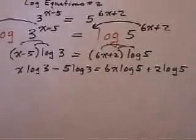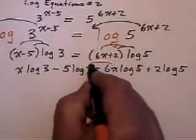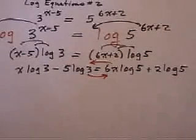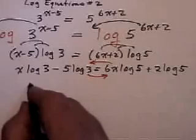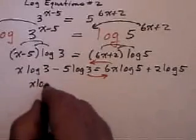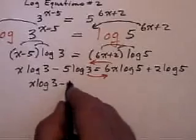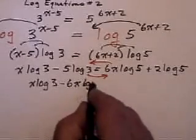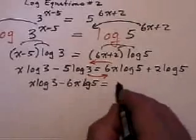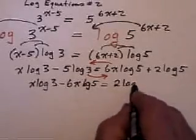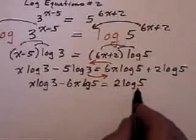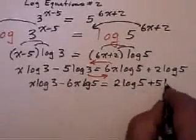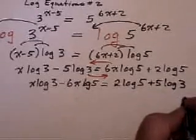Now, the next stage we're going to do is go cross border shopping. Everything with an x on it will bring to one side. Everything without an x will take to the other side. So over here we have x log 3 and we change signs 6x log 5. Over here we have 2 log 5, which remember it means two times log 5. And the minus 5 becomes a plus 5 log 3. Okay.